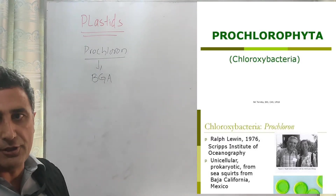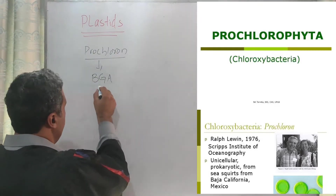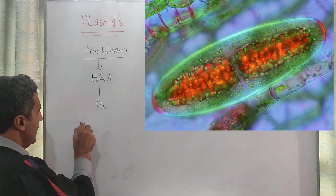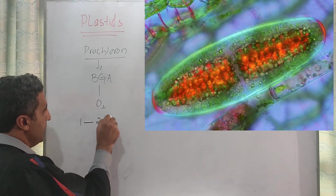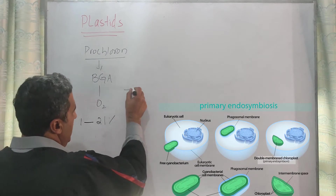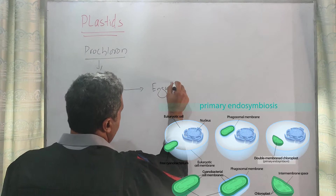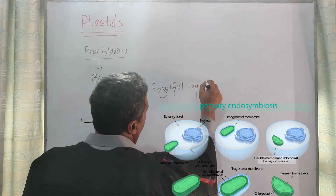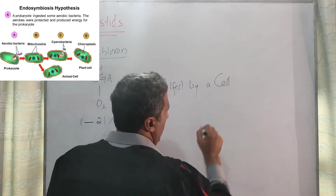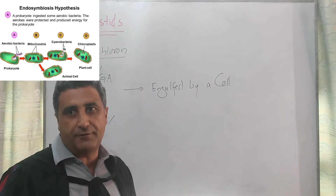It's a BGA, blue-green algae. These were the first oxygen producers on the planet. They increased the oxygen level from 1 to 21%. These organisms were engulfed by eukaryotic cells, by another cell. And that was the beginning of the plastid — that was the beginning of the chloroplast.